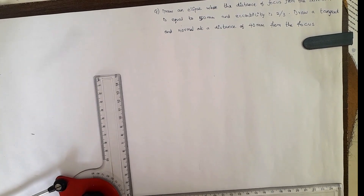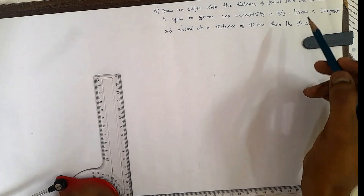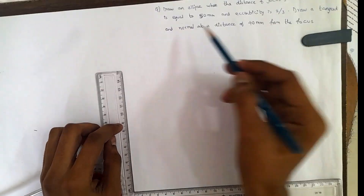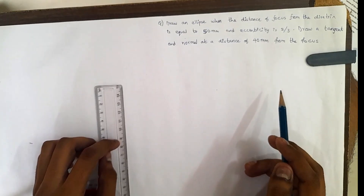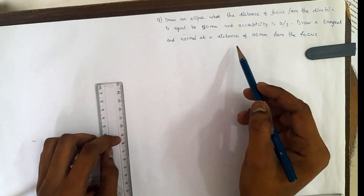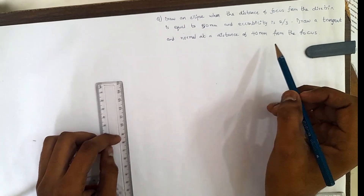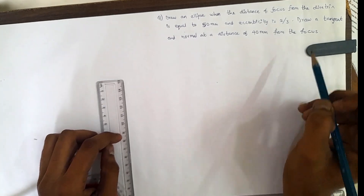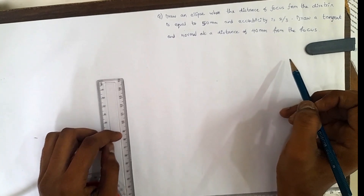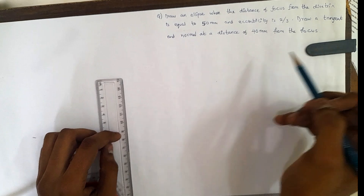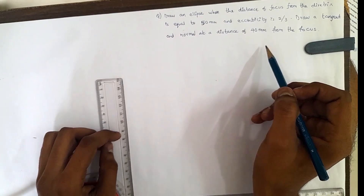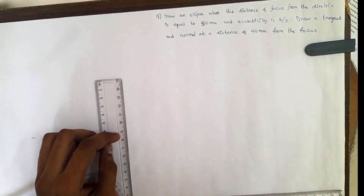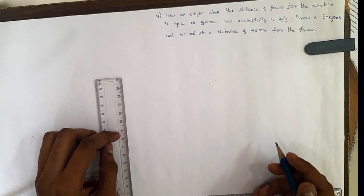Draw an ellipse when the distance of the focus from the directrix is equal to 50 mm and eccentricity is 2 by 3. Draw a tangent and normal at a distance of 40 mm from the focus.